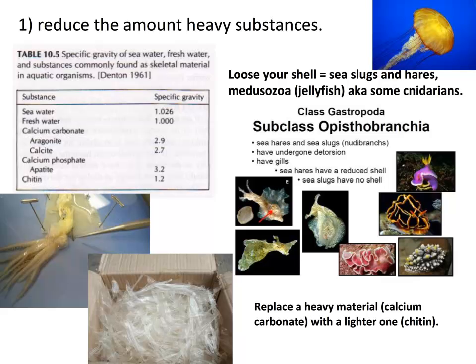Reducing heavy substances is a simple strategy commonly seen in molluscs. Molluscs normally have a hard calcium carbonate shell, but squid (also molluscs) have pens made of chitin rather than calcium carbonate. Nudibranchs — sea slugs, a subclass of Gastropoda — have lost their shells completely or have greatly reduced shells. By losing heavy components such as bones or shells, organisms can increase their buoyancy.